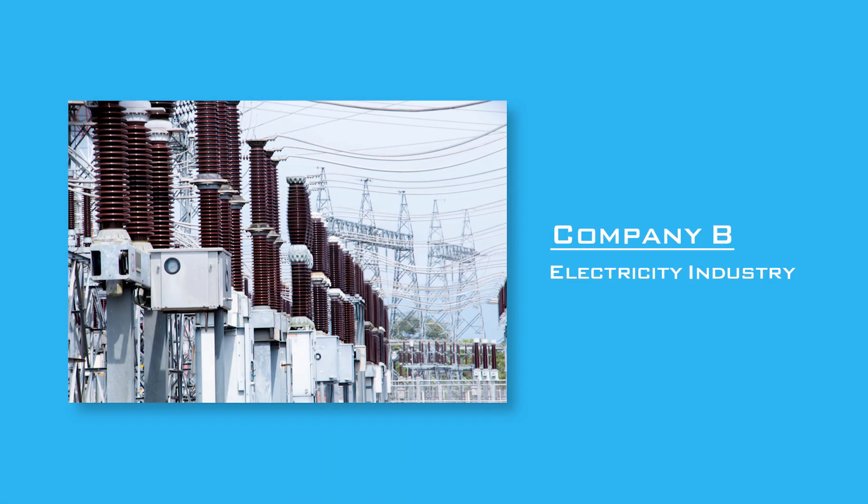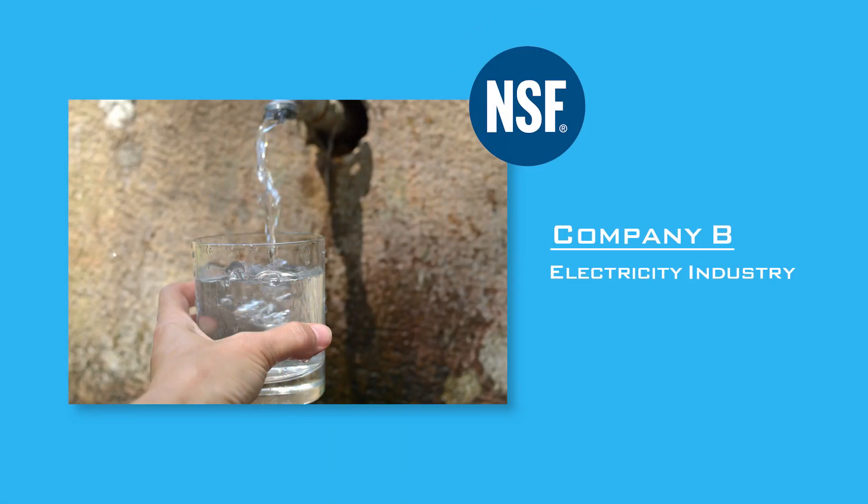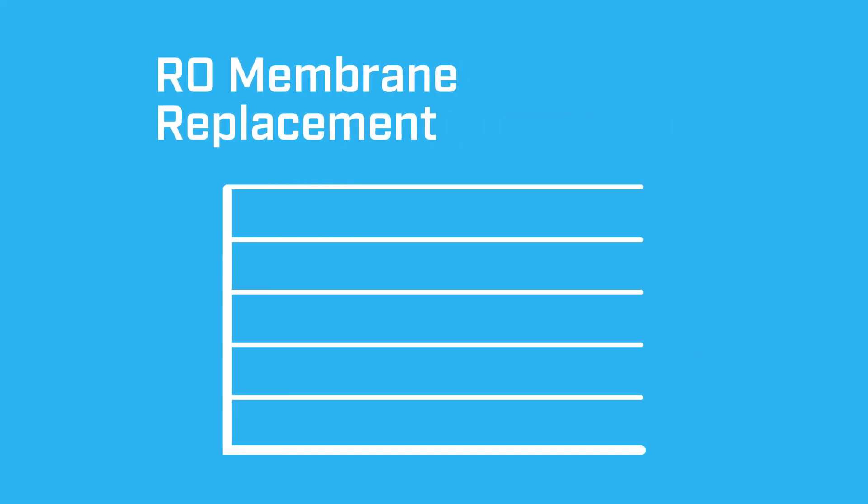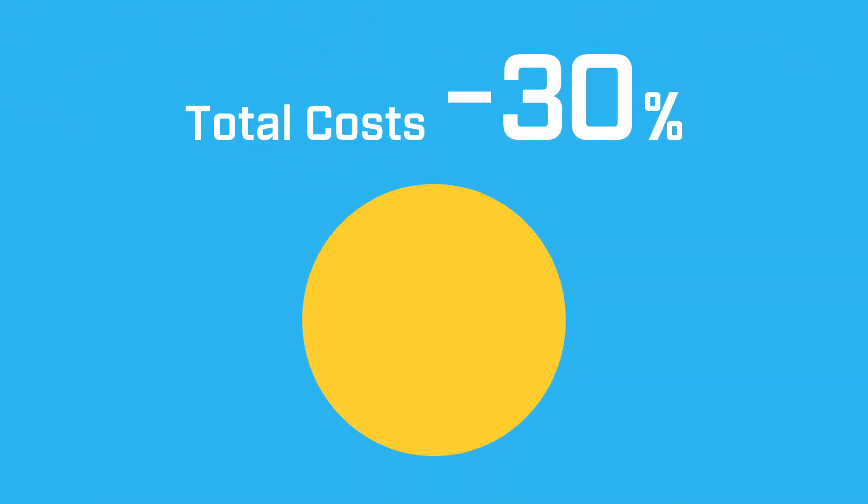At Company B, applying the NSF-certified Kuriverter IK110 resulted in a 50% reduction in the frequency of RO membrane replacement, and a 30% reduction in the total cost while allowing them to attain the targeted water quality.